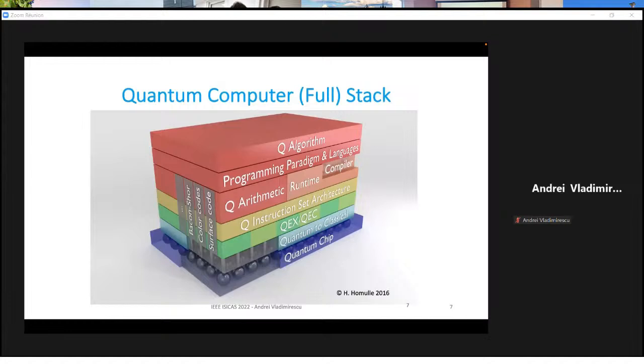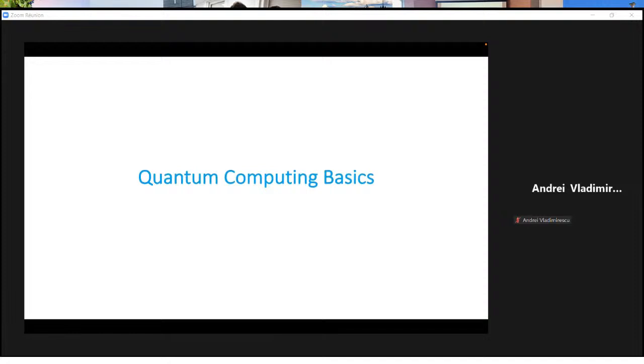This is the generic view of what we call a full stack quantum computer, which starts with the quantum algorithm, compilers, arithmetic and so on, getting down to an instruction set. So the architecture of the computer. And then this is the quantum execution and control unit. And then it's the quantum to classical interface and the quantum chip. So in this talk, the work that we're doing is going to refer to the bottom three categories.